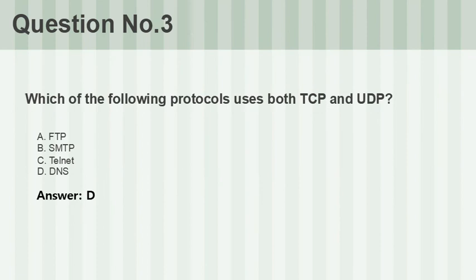Question number three: Which of the following protocols uses both TCP and UDP? A. FTP. B. SMTP. C. Telnet. D. DNS. Answer: D.